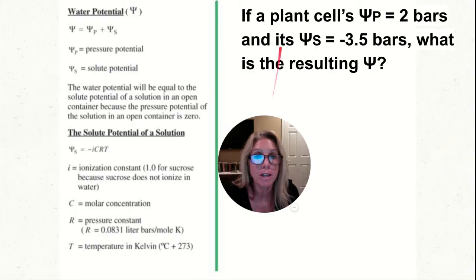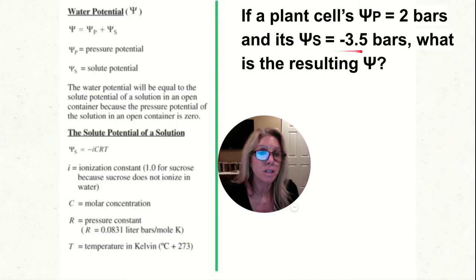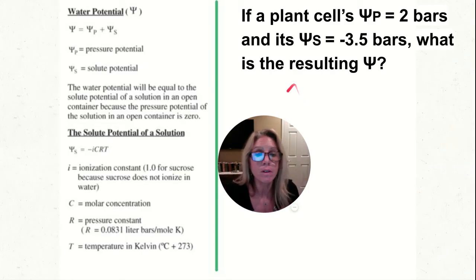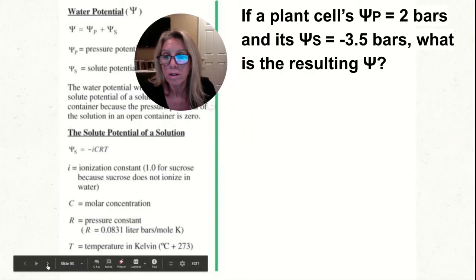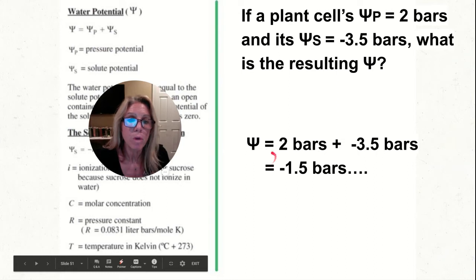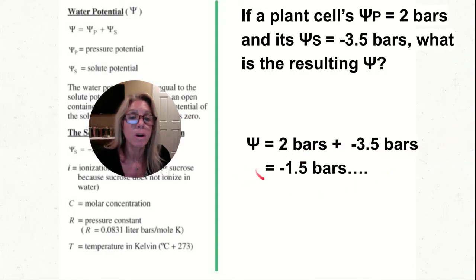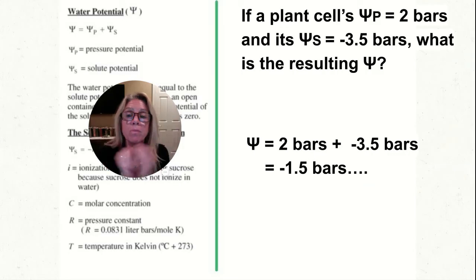Simple practice question: if a plant cell's pressure potential is 2 bars and its solute potential is negative 3 bars, what is the resulting water potential? Water potential equals pressure potential plus solute potential. So the water potential would be 2 bars plus negative 3.5 bars — the resulting water potential of this plant is negative 1.5 bars. That's predicted because pure distilled water has a water potential of zero, and anything with solutes in it goes negative.